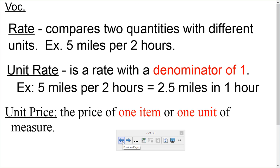Rate. Rate compares two quantities with different units. For example, 5 miles per 2 hours. Unit rate is a rate with a denominator of 1. That's very important to know. A denominator of 1.